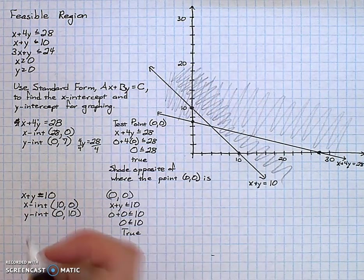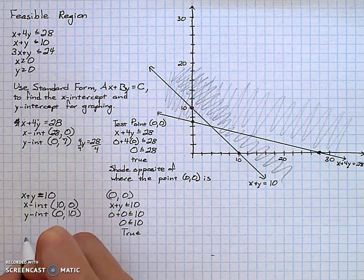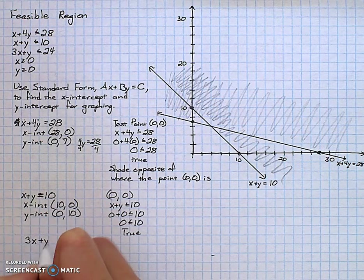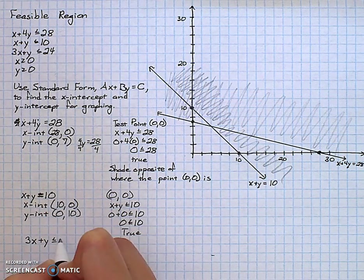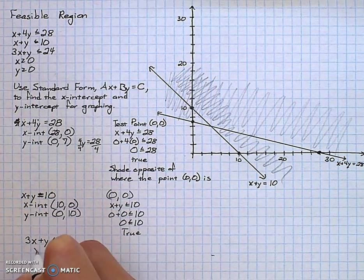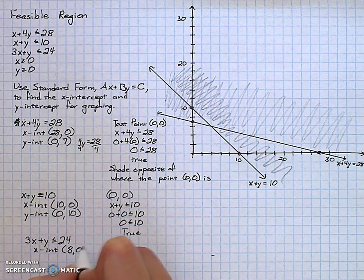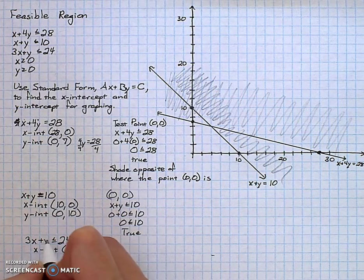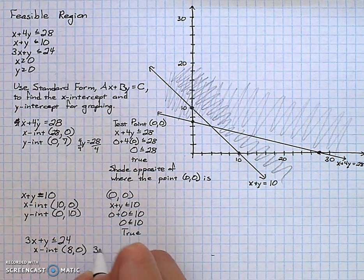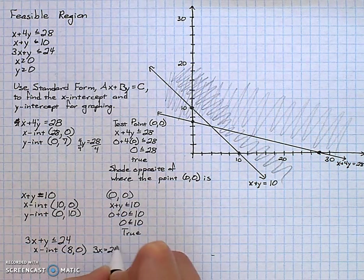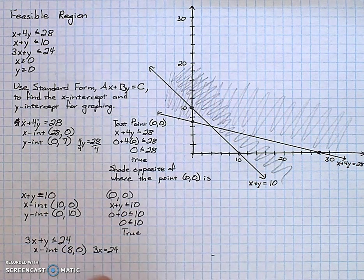My third inequality is 3x plus y is less than or equal to 24. The x-intercept will be 8, 0. Because when I put 0 in, I have 3x equals 24. And when I divide by 3, I get x equals 8.